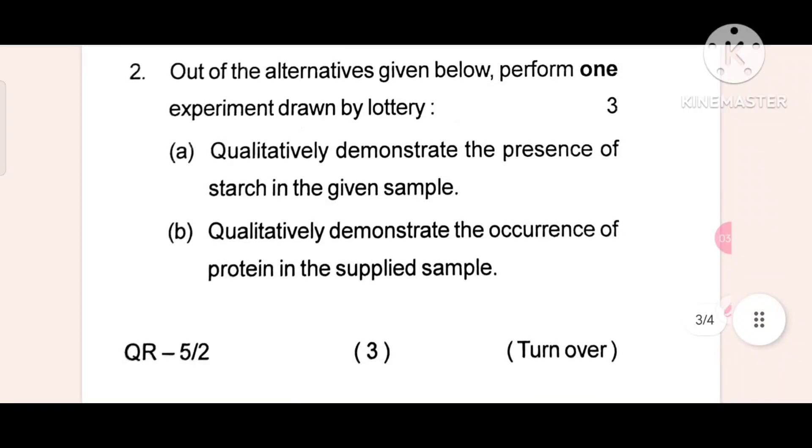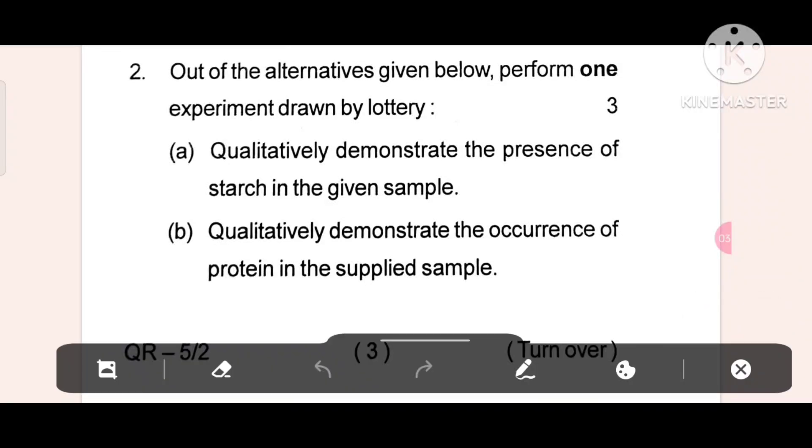Number two. Out of the alternatives given below, perform one experiment drawn by lottery. One, qualitatively demonstrate the presence of starch in the given sample.